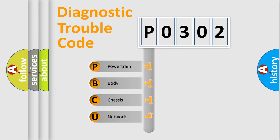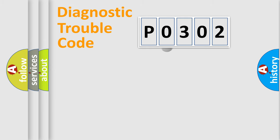We divide the electric system of automobile into four basic units: Powertrain, Body, Chassis, and Network. This distribution is defined in the first character code.